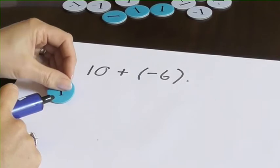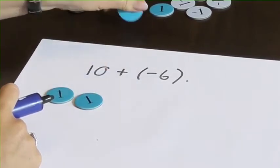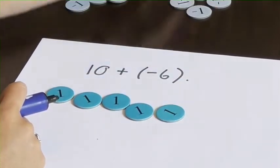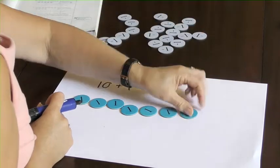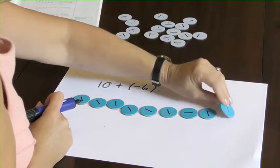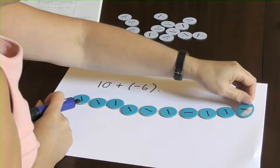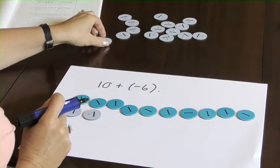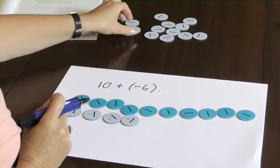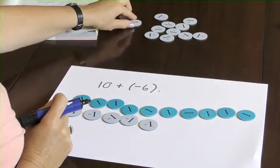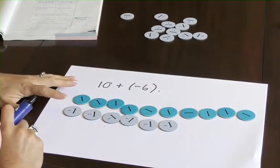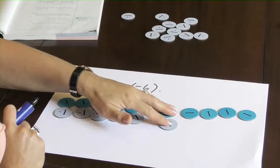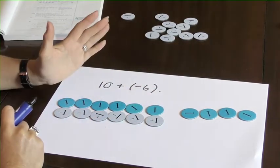But let's have a look at what happens. So we've got 10, 10. And then we've got 6 negative 1s: 2, 3, 4, 5, 6. I then look at my zero pairs. So these are the zero pairs that we can just ignore because they're zero.